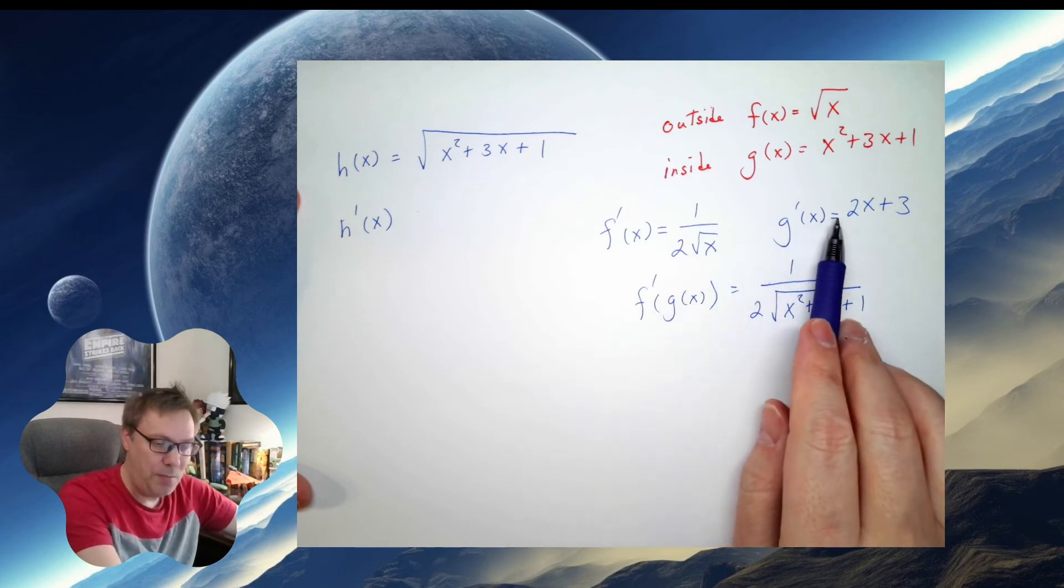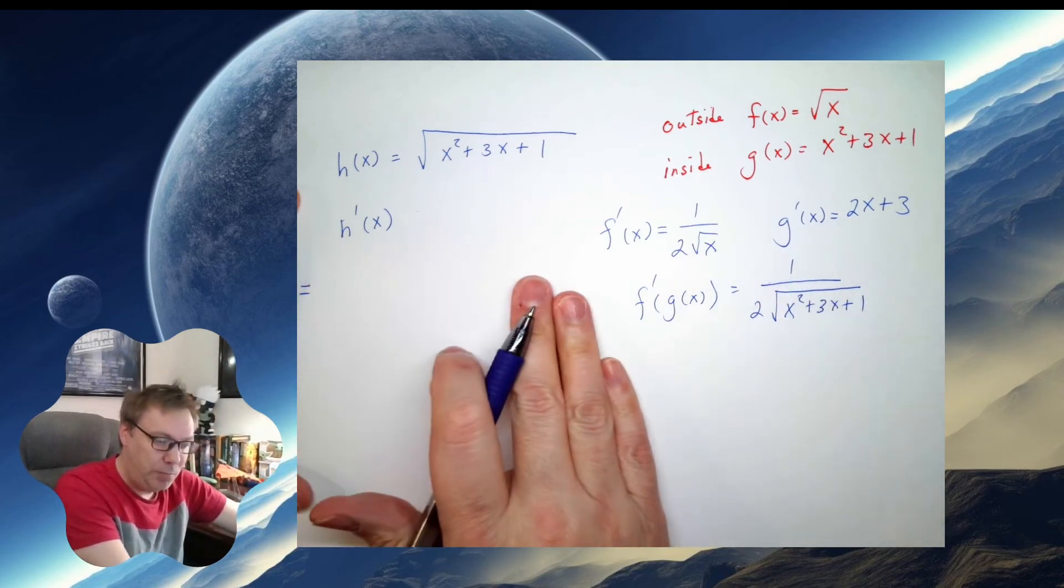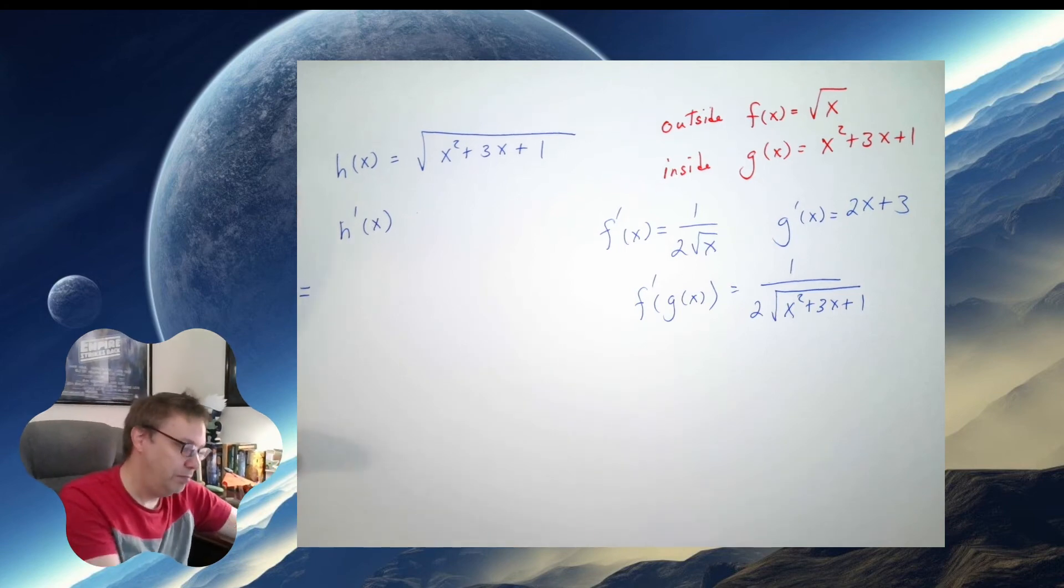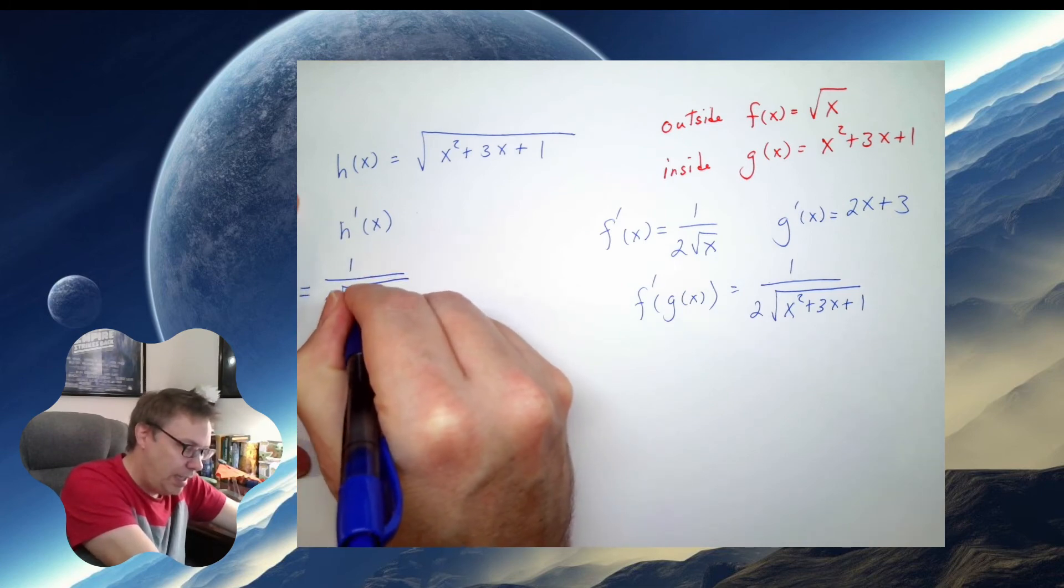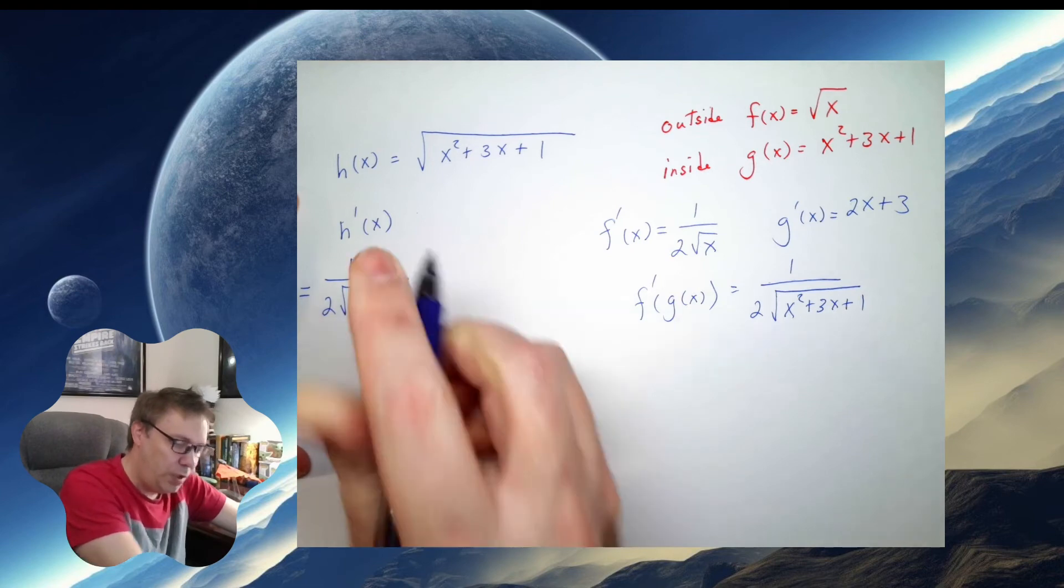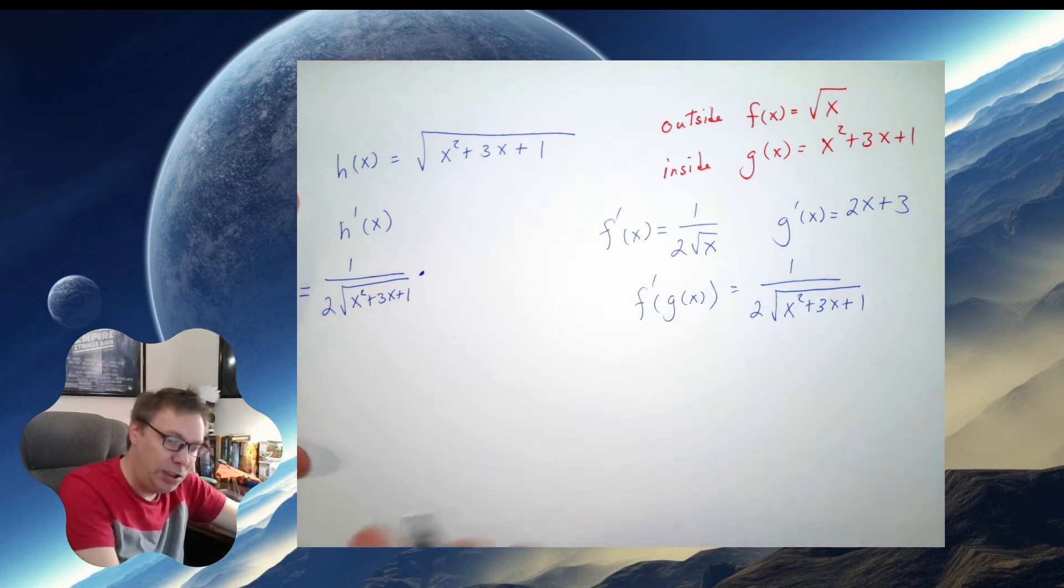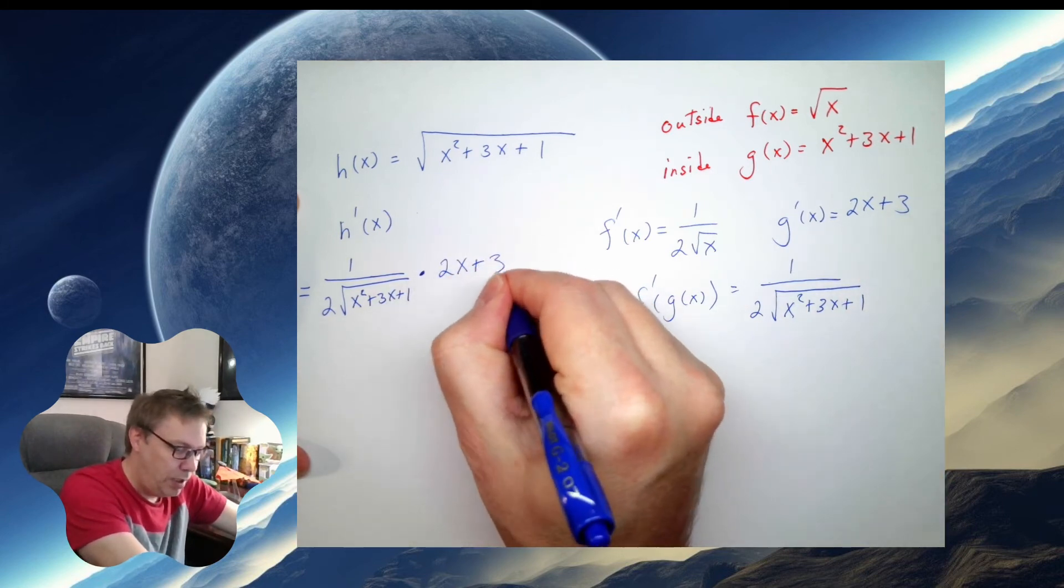So let's put this all together. I need this piece times that piece. So h prime of x, I'm going to drop it down here because it's going to be a little bit lengthy. It's going to be 1 over 2 root x squared plus 3x plus 1, times g prime of x, which is 2x plus 3.